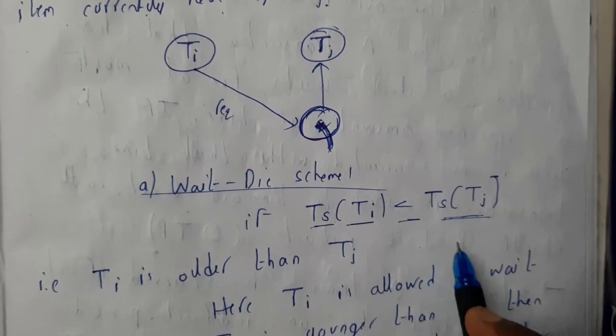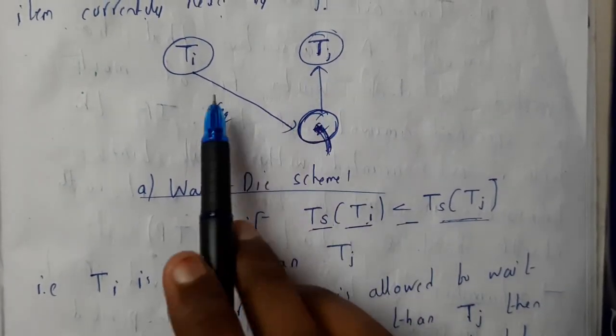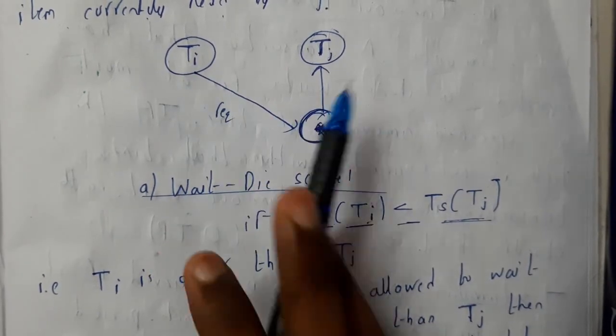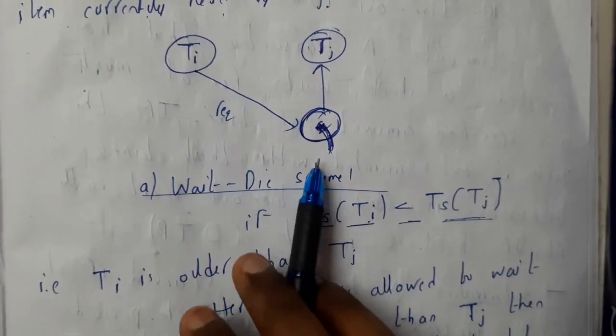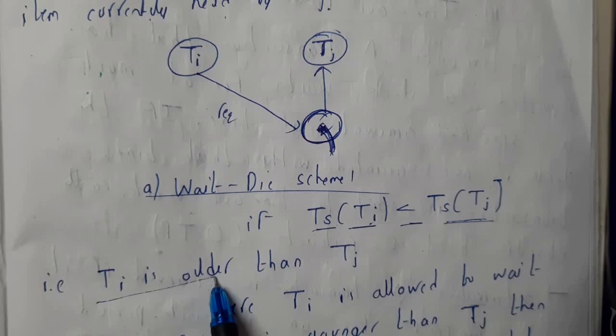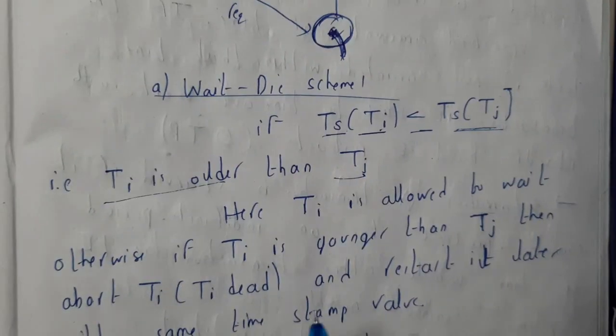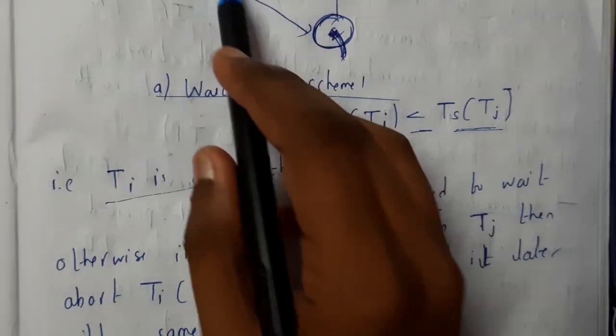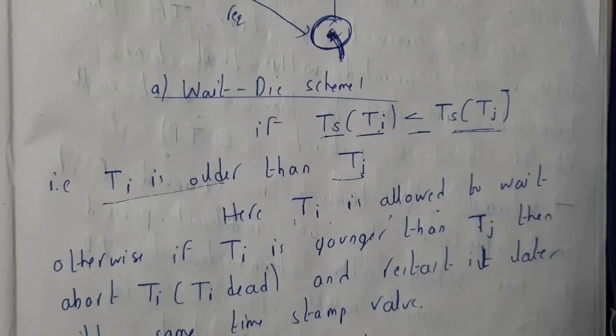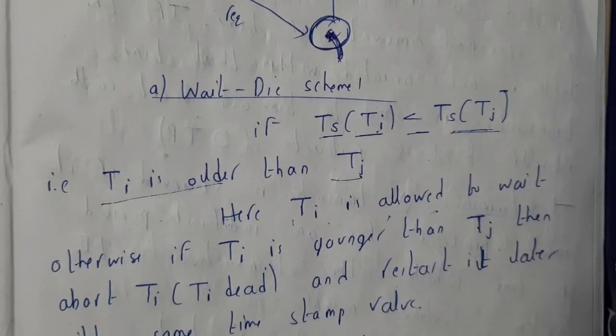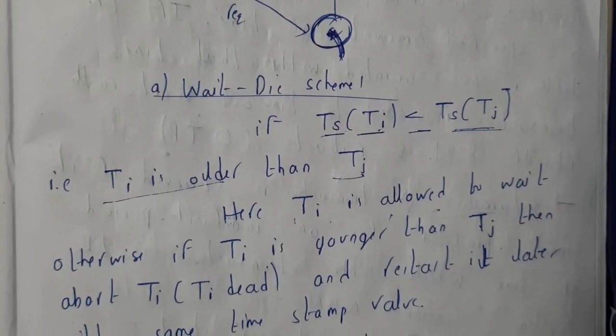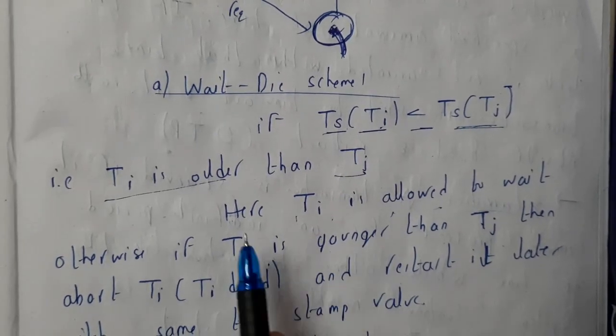If timestamp of Ti is less than timestamp of Tj, it means Ti came way long ago and keeps requesting. Ti is older than Tj. Ti is allowed because it is old and waiting for a long time, so everyone will give you a chance to do some work.